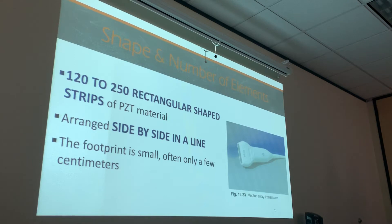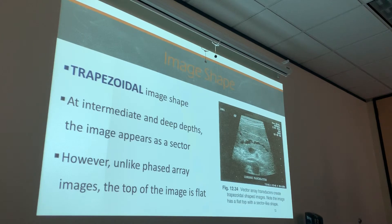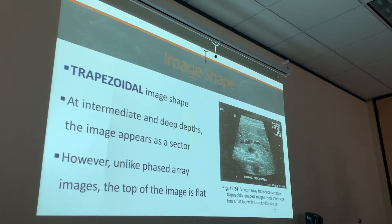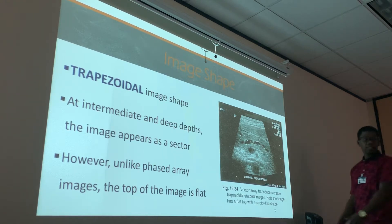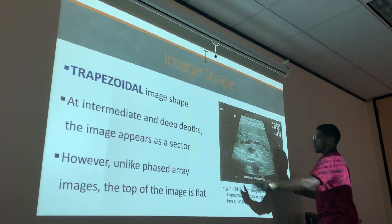You guys will see it. You need to be on the lookout for these probes — I may have to bring some pictures of these probes. So the image shape is going to be a trapezoidal image. See how it's shaped like a trapezoid? With a flat top, and it's still going out like a sector probe. Vector — creating a trapezoid-shaped image. At intermediate depths it appears as a sector.